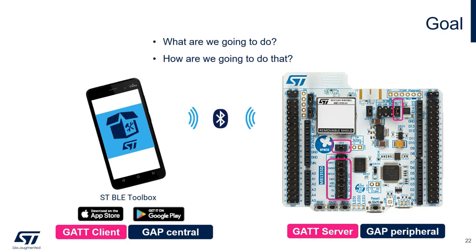In our case, the internal event will be pressing a button. To get the vocabulary straight, the smartphone in this scenario will act as a GAP central, meaning it is in charge of the connection establishment. And the WB Nucleo will be the GAP peripheral.